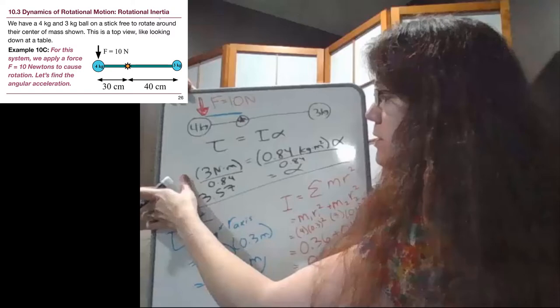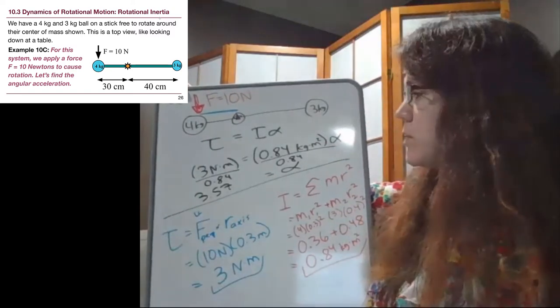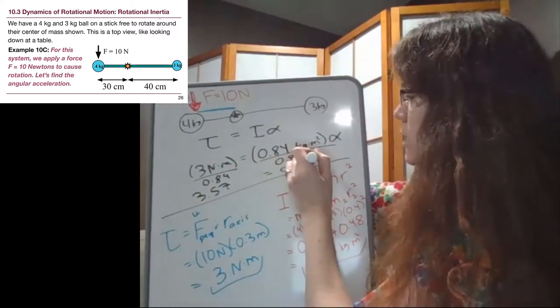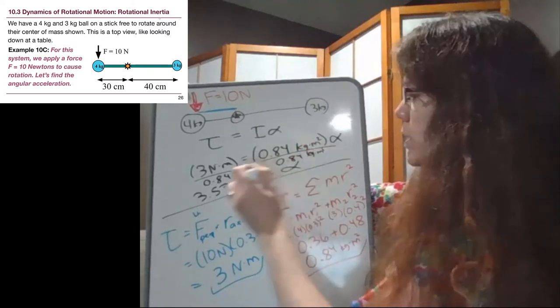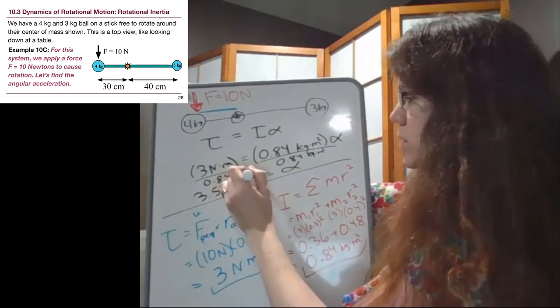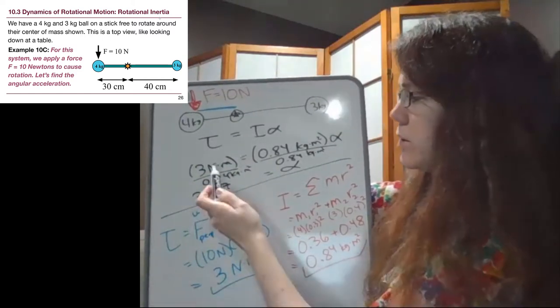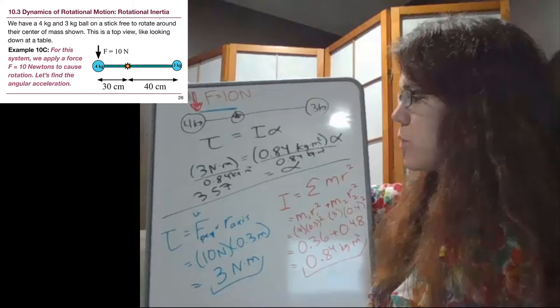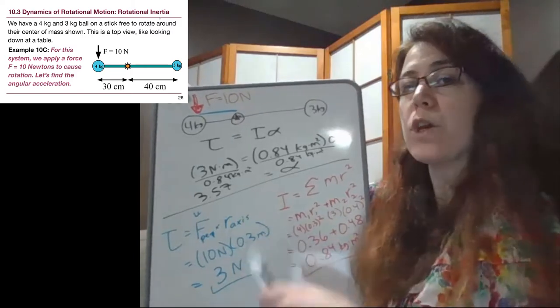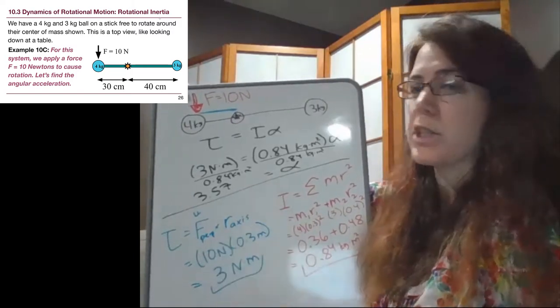And if you want to convince yourself of this on your own, you're certainly welcome to. When we take the kilograms, meters squared, kilograms, meters squared, and we look at how all of these units work together. Newtons times meters on top, kilograms times meters squared on the bottom. And we go back and think about what Newtons actually are.